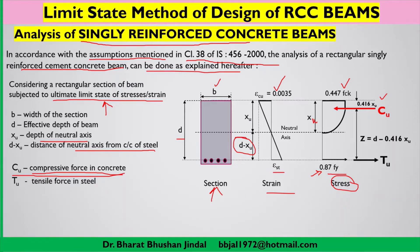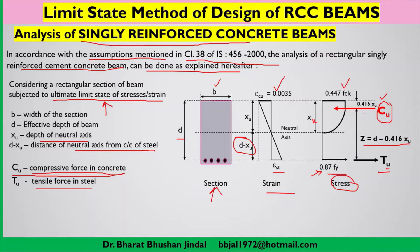Tu is the tensile force in the steel at the ultimate limit state, where T stands for tension and U for ultimate state. The distance between the lines of action of Cu and Tu is the lever arm z, because Cu and Tu form a couple. The lever arm is calculated as z = d minus 0.416 xu, where d is the effective depth of the section.